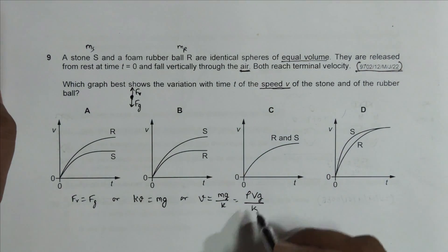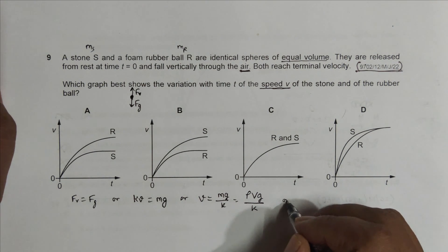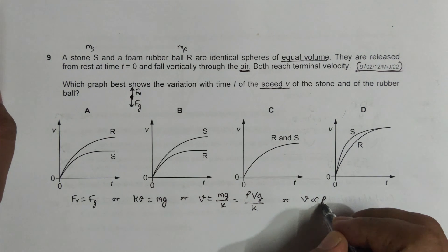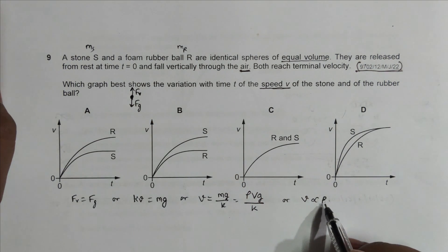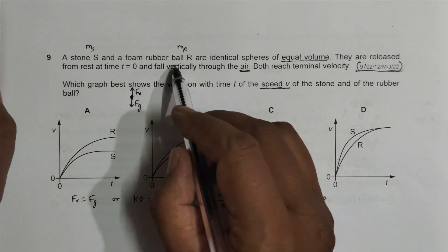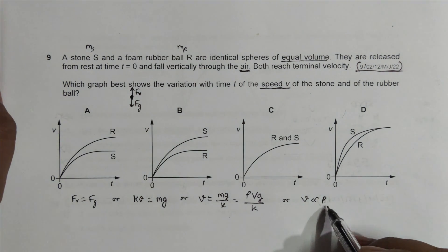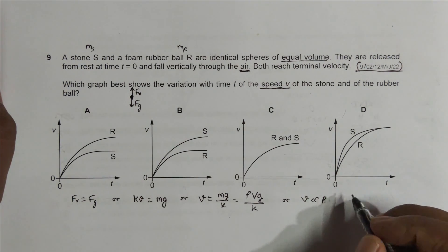That's why it means that this v is proportional to the density. Now what happens is for steel, density is high; for rubber foam ball, density is less. So for steel, v should be high. ρ of steel is high.